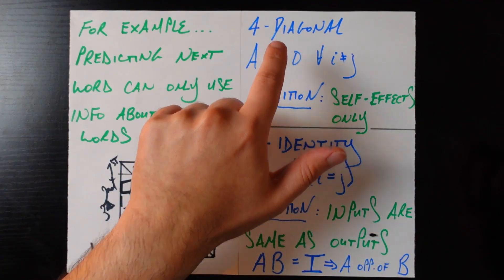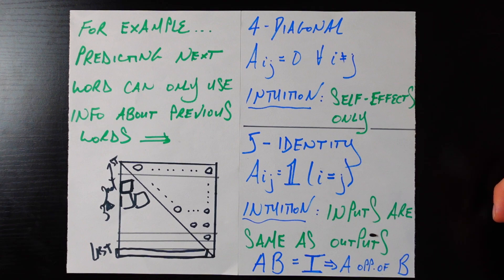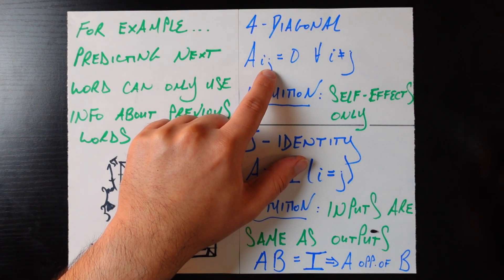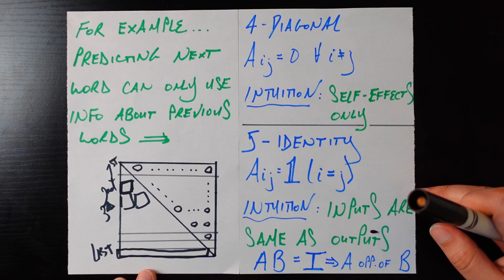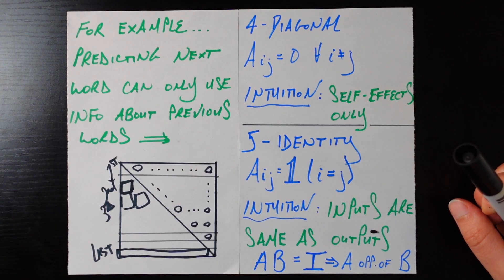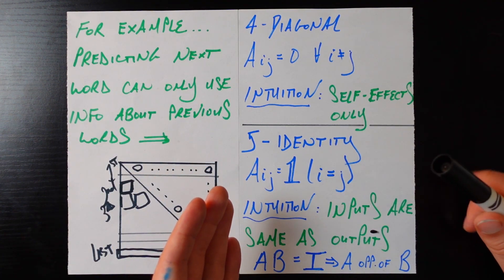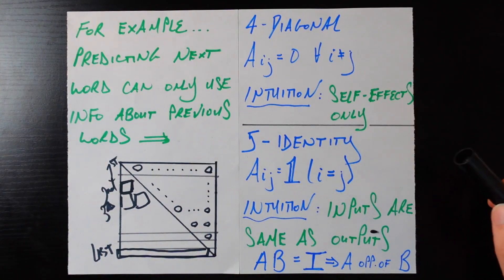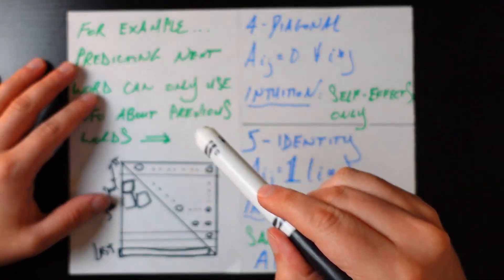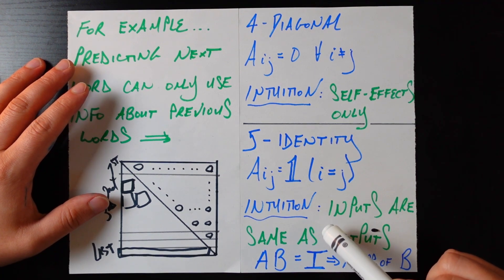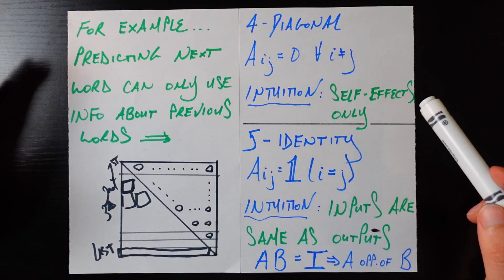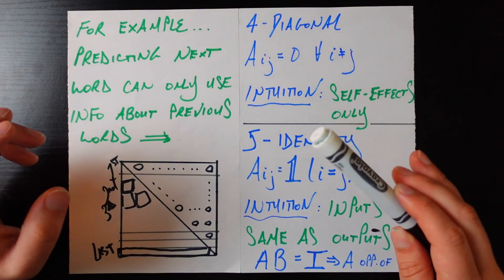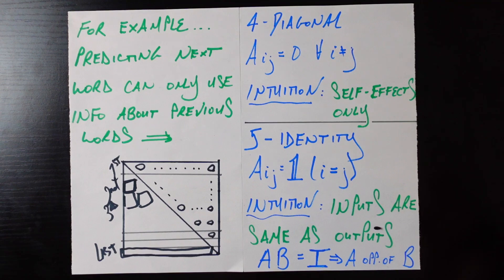Number four: diagonal matrices. These are very easy to understand. A diagonal matrix has a_ij equal to zero any time i is not equal to j. It's just a fancy way of saying that only the diagonal is allowed to have non-zero elements; everything off the diagonal must be zero. The intuition: because we're only allowing the diagonal to be non-zero, we only allow effects between some entity and itself. If we're asking about how entity i affects a different entity j, we're enforcing that's equal to zero. Self-effects only.